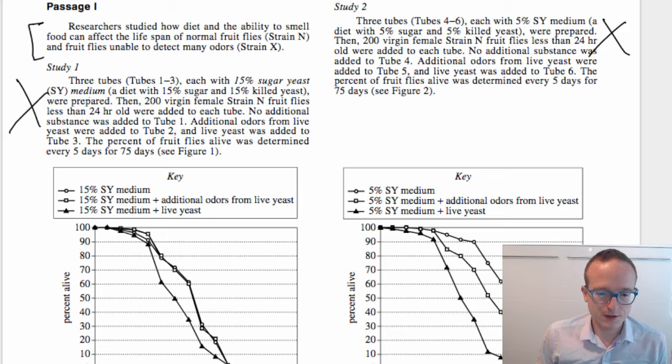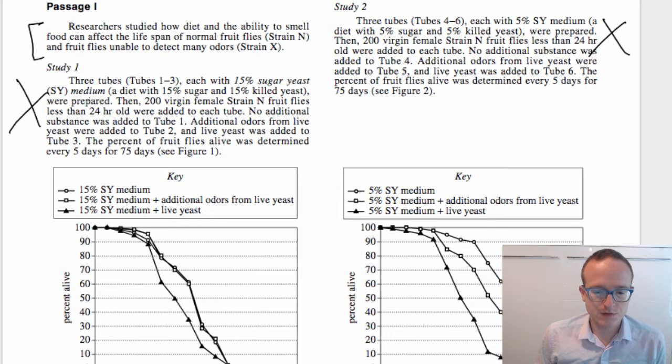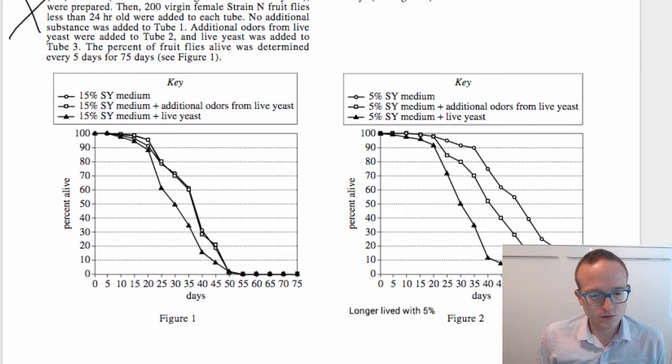You'll usually have one figure after each of the studies. Sometimes you have zero figures, sometimes you have two. But here, study one refers to this figure, study two refers to this figure down here. So what's the difference between these two if you have the same x and y axis?